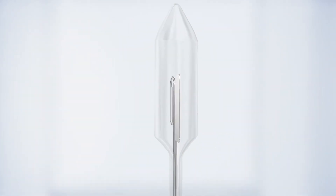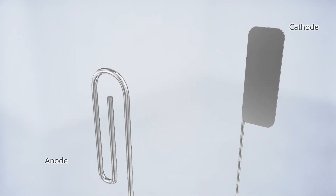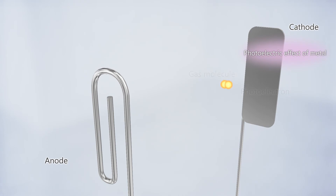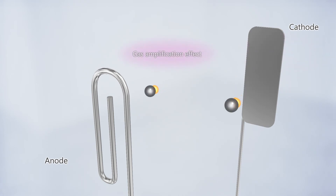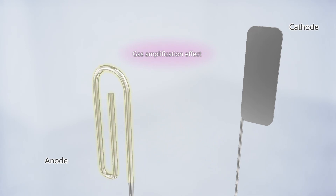Let's take a brief look at the operating principle of UVtron. When UV light passing through the UV glass strikes the cathode, the cathode emits photoelectrons. These photoelectrons are drawn to the anode and collide with gas molecules which become ionized. The electrons then reach the anode while repeatedly colliding with other gas molecules which also become ionized. By utilizing this gas amplification effect, the current is amplified and extracted as an electrical signal.